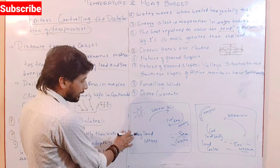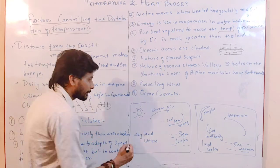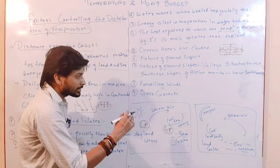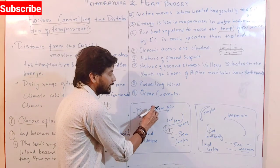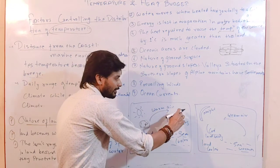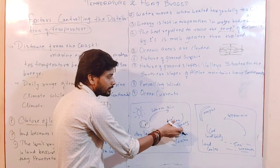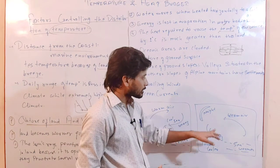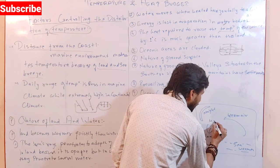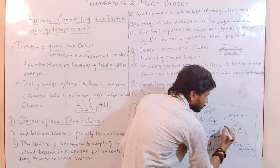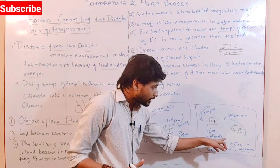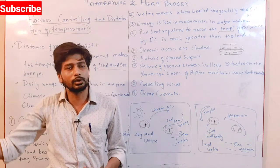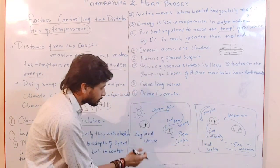Sea breeze and land breeze — during daytime, the temperature of the land is very high, creating low pressure over land and high pressure over the sea. So cool sea breezes move from the sea toward the land — this is called sea breeze. During night time, the land cools quickly creating high pressure over land, while the sea retains heat creating low pressure over sea. So cold land breeze moves from land toward the sea — this is called land breeze. In the sea, warm air rises upward and circulates back toward land.